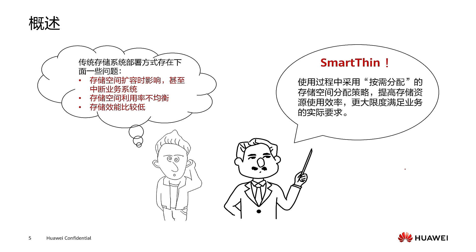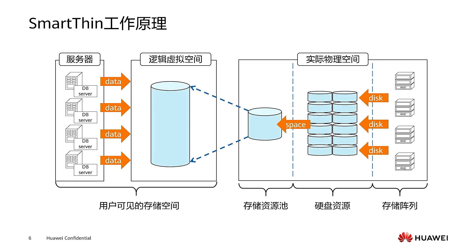That is, when creating a LUN, it does not really configure specific space. Instead, when the user actually needs to use this space, the corresponding actual space is allocated. The unallocated space, as public space, can be allocated to any LUN that needs it. In this way, the utilization rate and efficiency can be improved. At the same time, dynamic space adjustment provides the ability to expand online LUN space without affecting business operations.